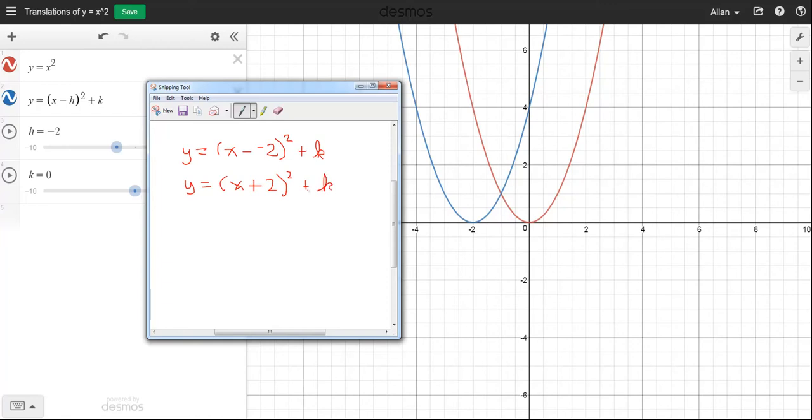We're not worrying about the k value for a moment. So notice even though it's written as x plus two, it's gone two units to the left. And that's because it's x minus the h value.